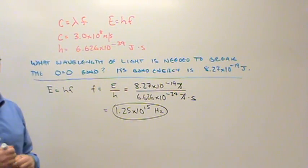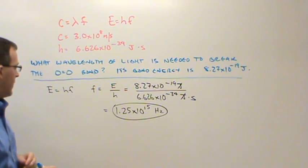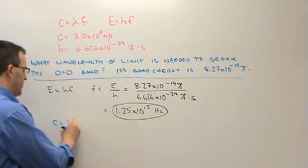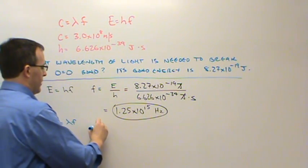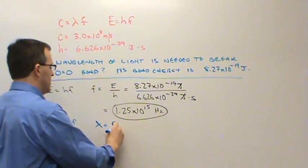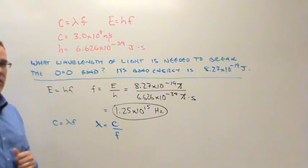We have another relationship between wavelength and frequency that relates to the speed of light. So c equals lambda times f. In that case, lambda is going to be equal to c divided by the frequency.